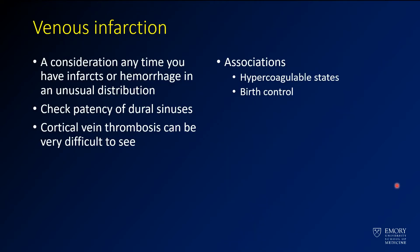Any time you have infarcts or hemorrhage in an unusual distribution — and crossing the tentorium was very unusual — the combination involving the right basal ganglia as well as the cerebral and cerebellar hemispheres was a little unusual. So you've got to look at the dural sinuses. Cortical vein thrombosis can be very difficult to see, but you definitely want to check the bigger sinuses.